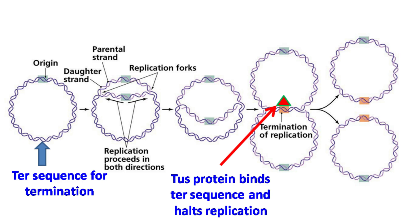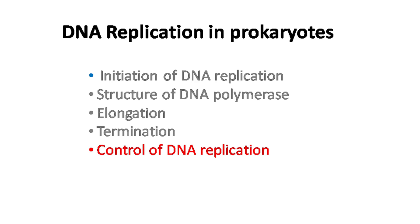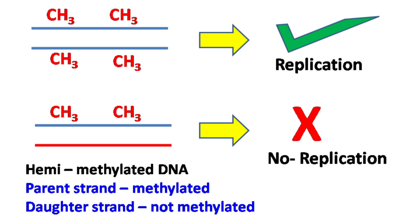Termination of DNA replication occurs via Ter sequences present on the DNA and the Tus protein. As the chromosome of bacteria is circular, both replication forks meet at the termination sequence, where they are encountered by Tus protein, which halts the movement of the replication fork. This results in the formation of two catenated or linked circular DNA. Finally, topoisomerase II decatenates the two circular DNA, resulting in two separate chromosomes.